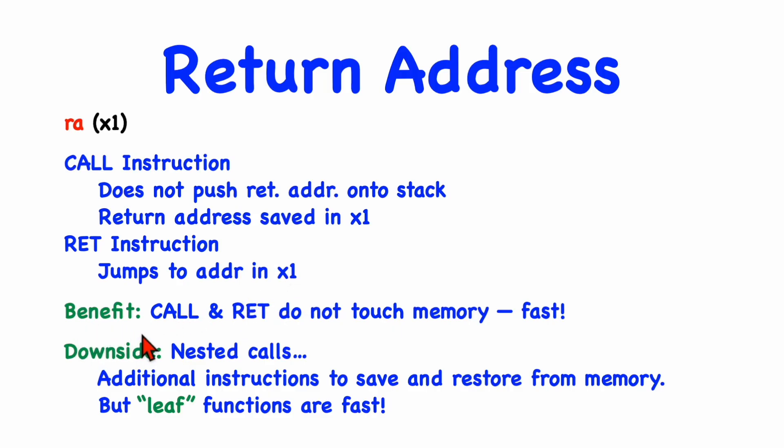The benefit of doing it this way is that the call and return instructions don't need to go to memory, and thus they can execute quite quickly. The downside is when you have a nested call, that is, one function that calls another. In that case, you're going to have to insert additional instructions to save and restore the return addresses from memory. That is, you're going to have to actually push it onto the stack and pop it from the stack. But a leaf function, which is a function that doesn't call any other function, can be called and returned from very quickly, and so that's a great benefit.